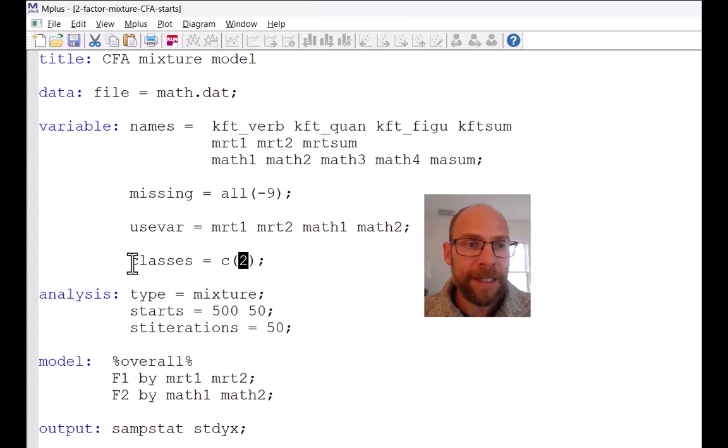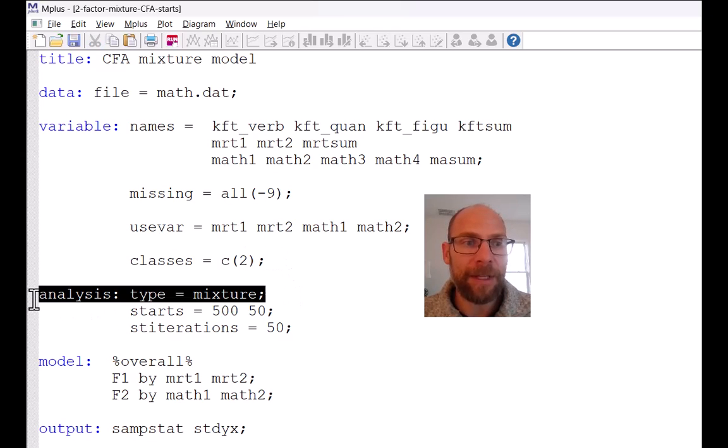And so this classes subcommand in conjunction with analysis type equals mixture makes Mplus extract more results than just for the overall group. So Mplus then knows okay, so this is supposed to be a mixture distribution analysis where we have two latent classes and so I have to estimate the parameters of this factor model in two separate previously unknown subgroups.